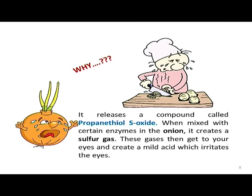There is this compound called propanethiol S-oxide which emanates out when you cut onions. When onion is mixed with certain enzymes, it emanates sulfur gas. The gas gets to our eyes, which creates certain mild acids that irritate the eyes. So it is organic chemistry working well into our eyes.